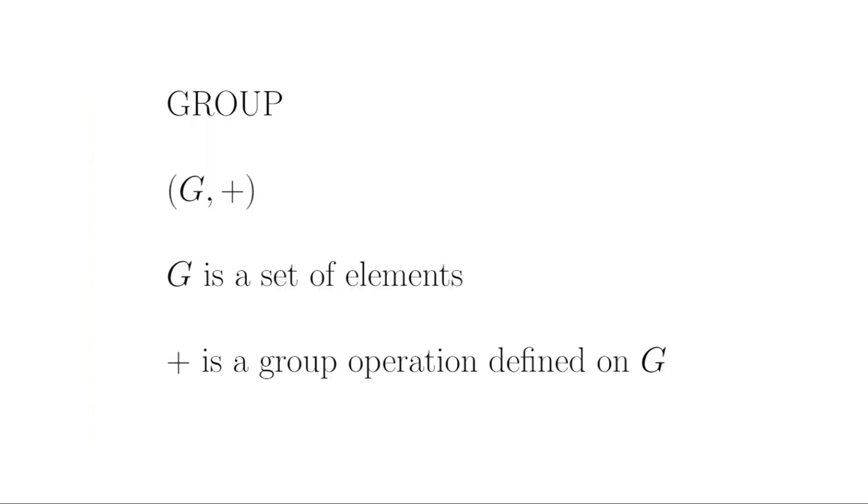Okay, so first things first. As always, let's start by defining our terms. A group is a mathematical object consisting of a set of elements that I'll call G and a group operation that I'll call addition that satisfies certain properties.